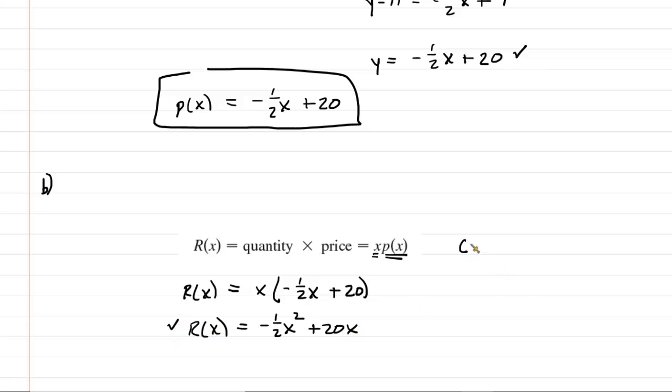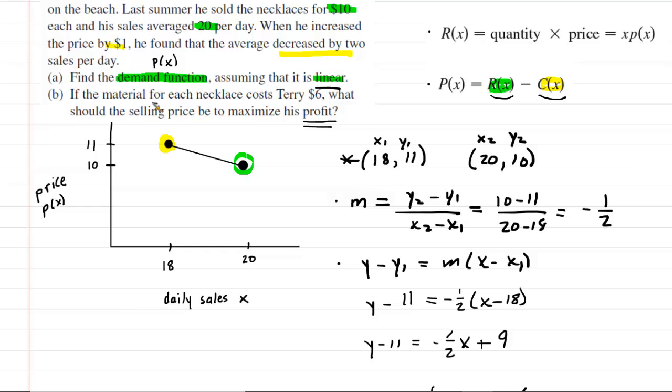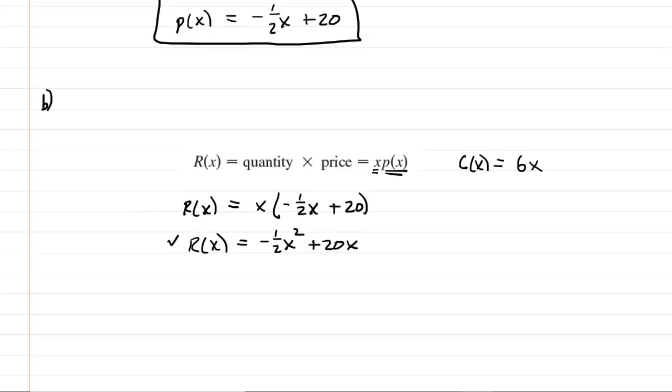But we also need a cost function, c of x. We can go back up and note again that the material for each necklace is going to cost Terry $6. So it's $6 per necklace. To get the total cost, you would multiply that per necklace cost, the $6, by the number of necklaces. So it'd simply be 6x. Good. We have the revenue and the cost function.